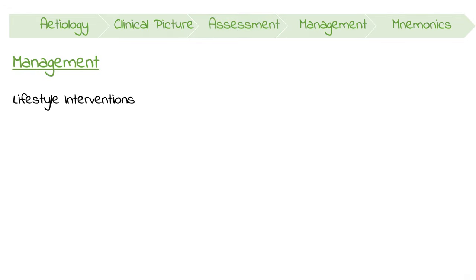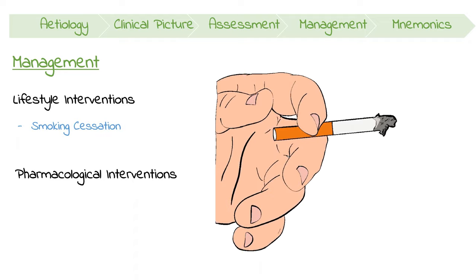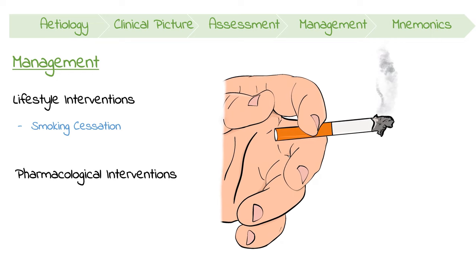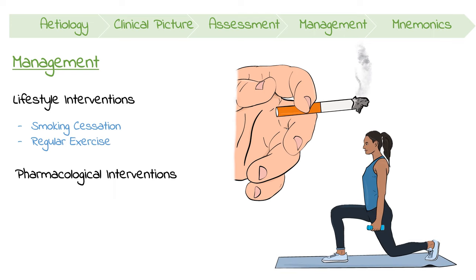Management should include serious lifestyle interventions and pharmacological treatment if necessary. One important change patients can make is smoking cessation, as smoking is associated with greater disease activity. Regular exercise is important for improving strength, mobility, and mental health. Pharmacologically, NSAIDs are a cornerstone of management. Corticosteroid injections have a more limited role but may still be beneficial for enthesitis.